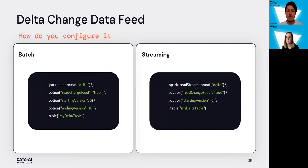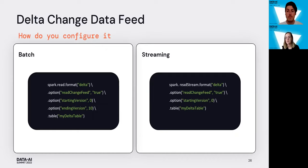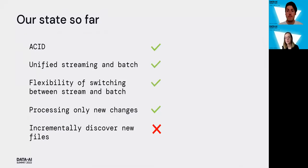Delta Change Data Feed can be configured in both batch and streaming. In batch, you read with format delta, set the option readChangeFeed to true, and specify versions between which you want to see changes. This can also be replaced with timestamps. In streaming, it's quite similar — you use readStream with delta format, set readChangeFeed to true, and give a start version. With Change Data Feed, we can now process only the newest changes.